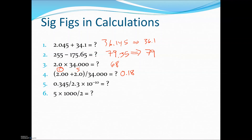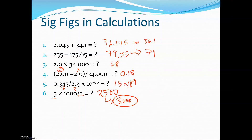For 0.345 divided by 2.3 times 10 to the negative 10: you have three sig figs and two sig figs — the power of ten does not count as a sig fig but is part of the calculation. Typing it in, you get 1.5 times 10 to the ninth, which is correct for two sig figs. For the last one, 5 times 1000 is 5000, divided by 2 gives 2500. You need to round to one significant figure, so the answer is 3000. Do not put a decimal place — that would make it incorrect.